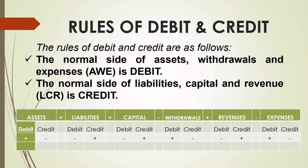Let us proceed with the rules of debit and credit. The normal side of assets, withdrawals, and expenses is debit. So you have the mnemonic AWE, which means that if you are going to increase assets, withdrawals, and expenses, you are going to debit — hence it is called the normal side. On the other hand, the normal side of liabilities, capital, and revenue, or LCR, is credit. When you say normal side, that is the side of the T-account you are going to use to increase that particular account. Presented here in the table is the expanded accounting equation.